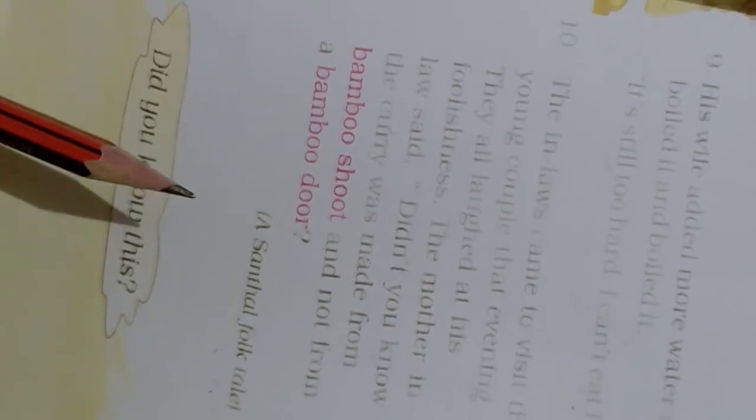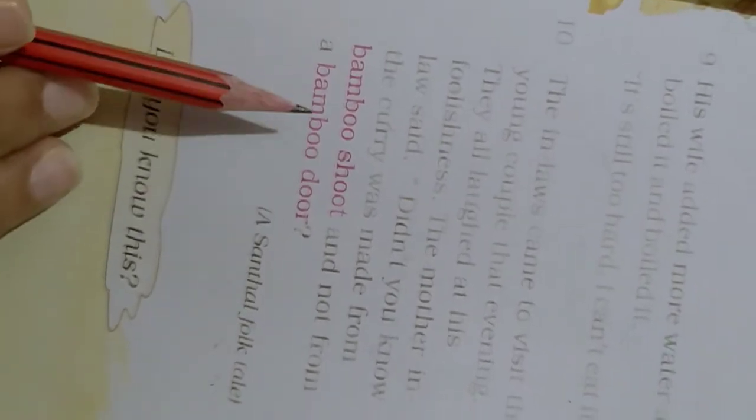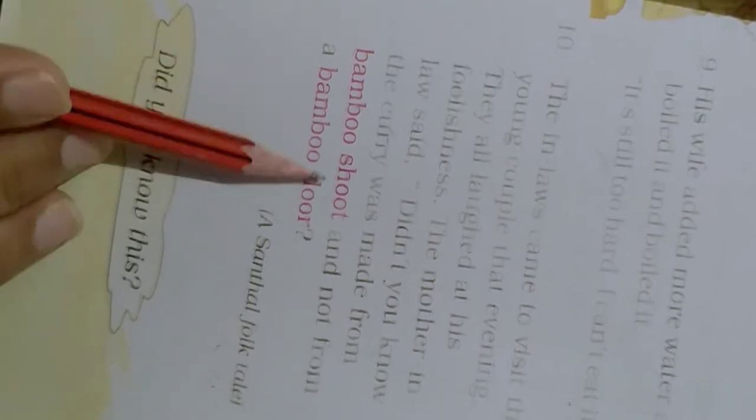That one is made, and that was not made from any bamboo door. That was made by a bamboo shoot. Bamboo shoot, shoot means you can say a small stem, a young stem of bamboo. It is called shoot which is soft, so you can make a curry from that, not from the bamboo door.